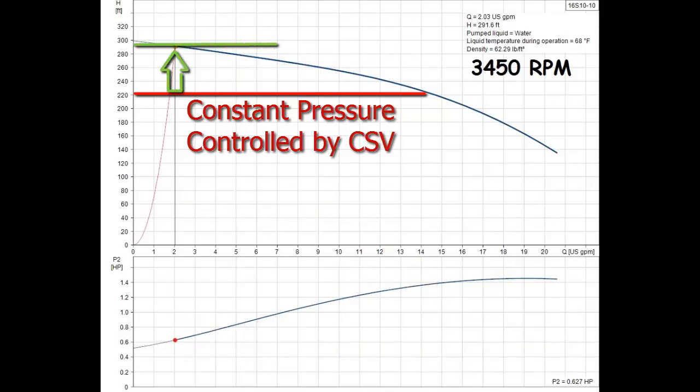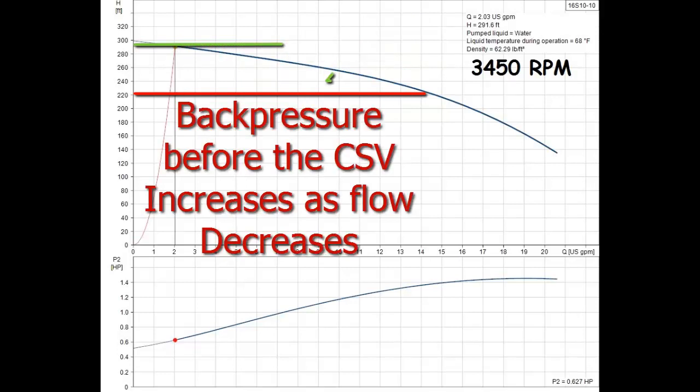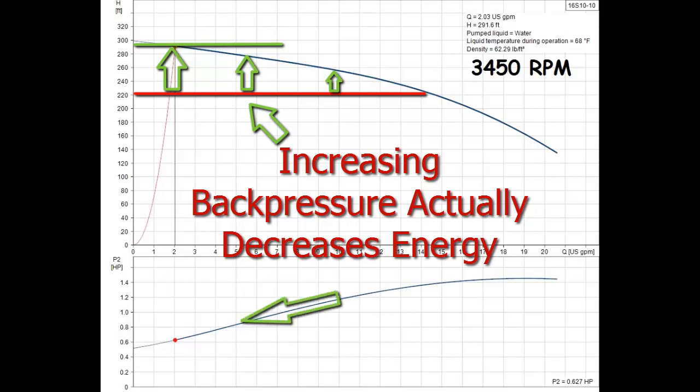The CSV makes the pump think it is in a deeper well, so it produces less flow when needed. The pressure before the CSV, which is called back pressure, increases when the flow is reduced. We now know that increasing the back pressure of the pump actually decreases the horsepower and makes the pump work easier.